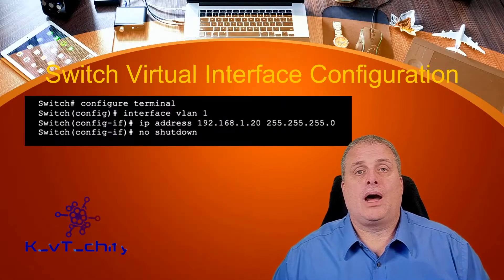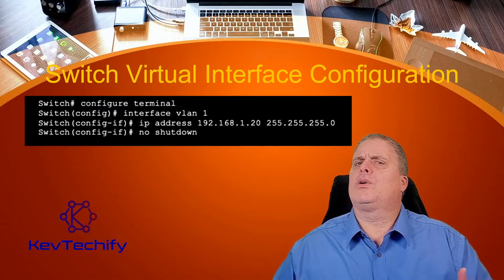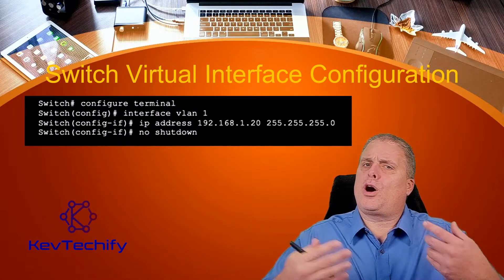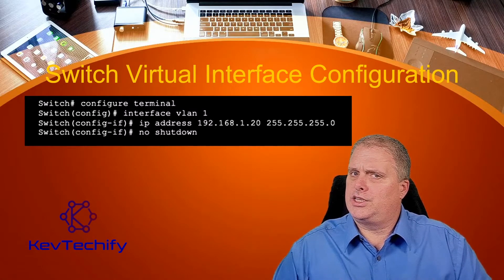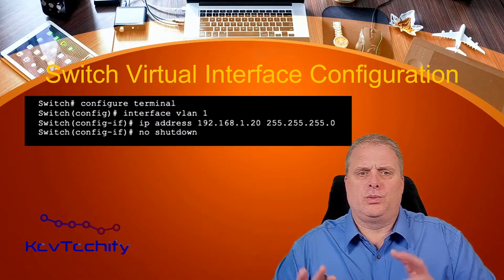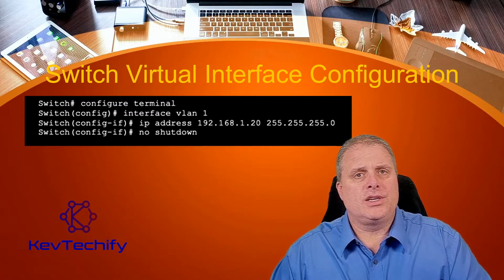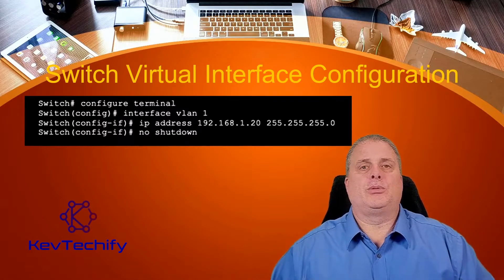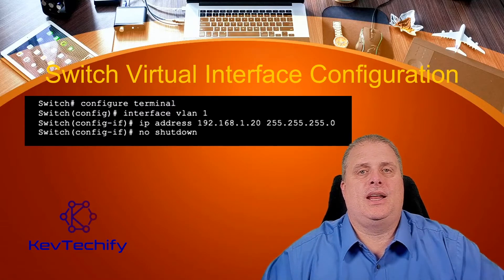In the Cisco operating system, the two methods do exist. Primarily, we're always setting our IP address manually. You can do it automatically and get your address from a DHCP server out there, but that's only in a very rare situation, because your networking devices are setting up the network and establishing that. So you want them to have a static IP address.